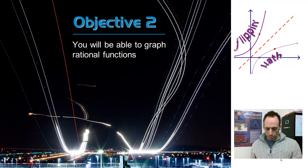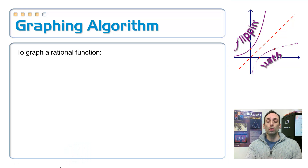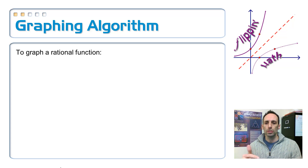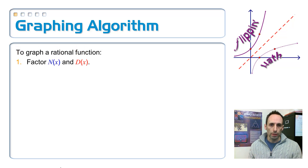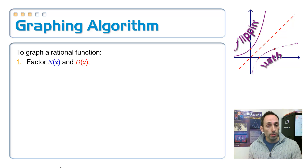We're going to start off by looking at a graphing algorithm. An algorithm is a set of steps that you follow to solve a problem. Here are step-by-step instructions on how to graph a rational function. Step number one: you always want to factor. You want to factor the top and you want to factor the bottom, because then it's very easy to find where the vertical asymptotes are, where your zeros are, and sometimes factors cancel.